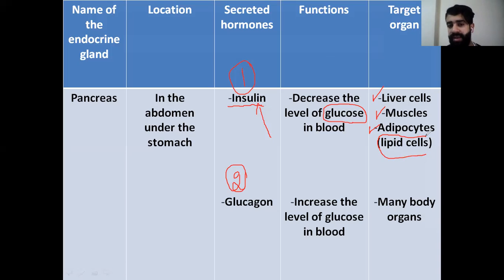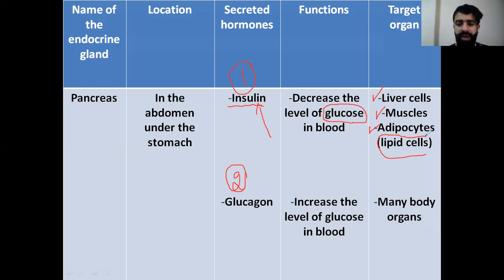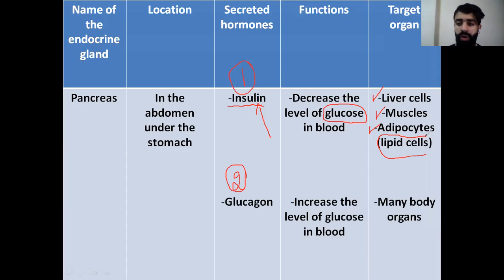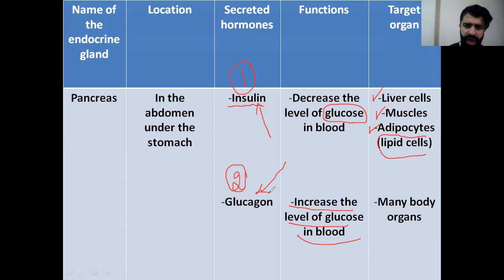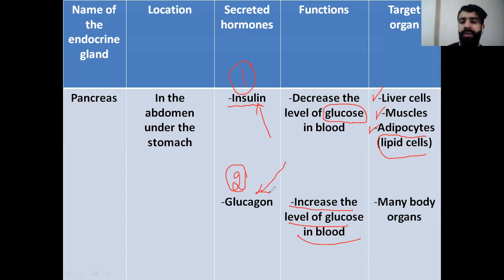The second pancreatic hormone is glucagon — the opposite of insulin. During fasting, the level of glucose decreases, so the stored glucose in other forms leads to the secretion of glucagon. Glucagon increases the level of glucose in the blood and works on many body organs. So insulin decreases glucose level and glucagon increases it.